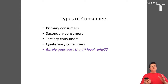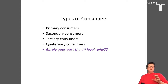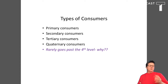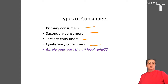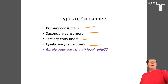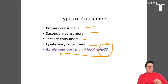We actually have many different kinds of consumers within ecosystems. Remember: producers, consumers, and decomposers. Consumers are very diverse, and there are different kinds depending on what they feed on. They're heterotrophic. So we have primary consumers, secondary consumers, tertiary consumers, and sometimes quaternary consumers. Rarely does this go past the fourth level, and why is a big question we're going to take up later.